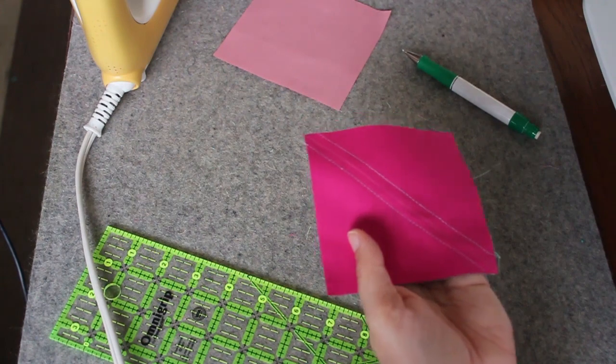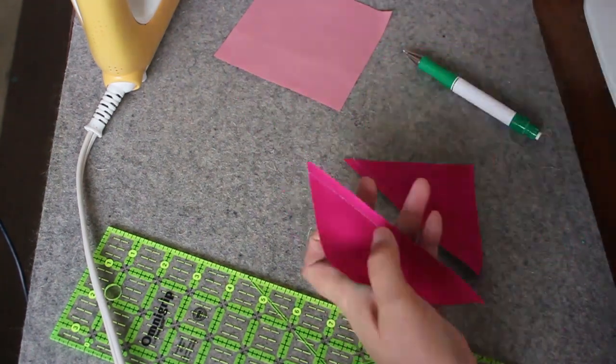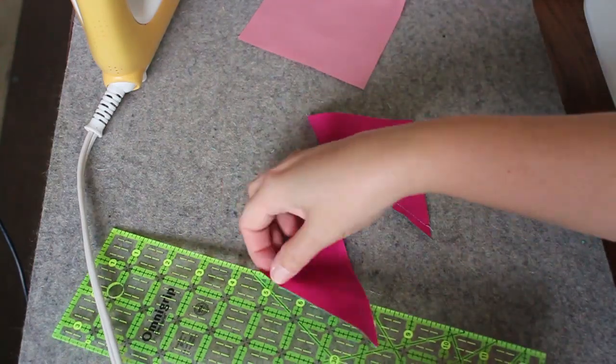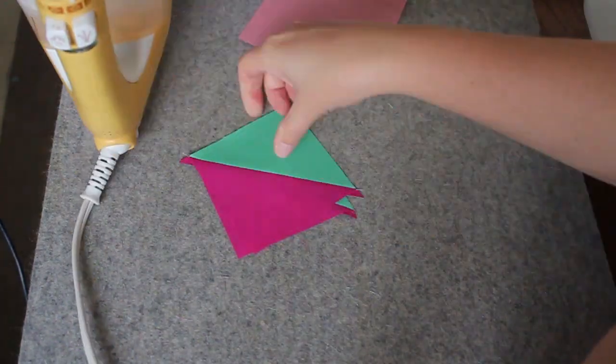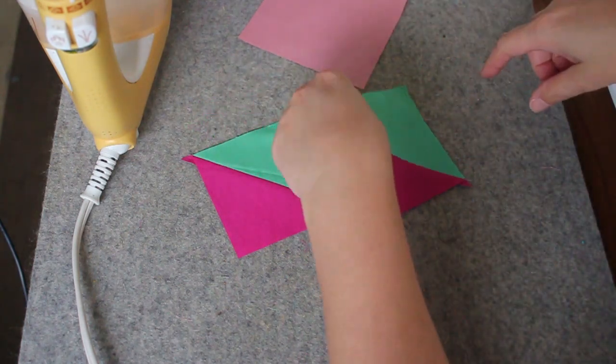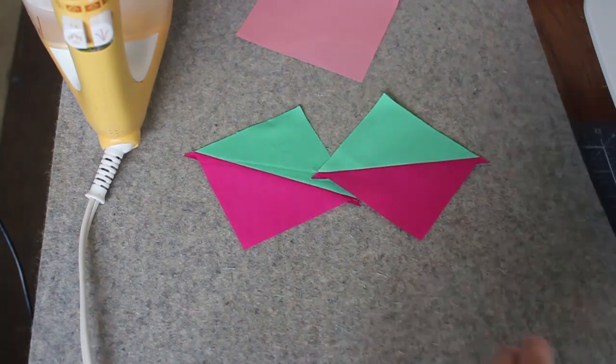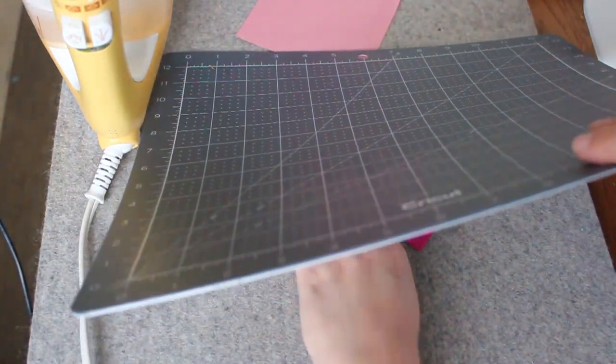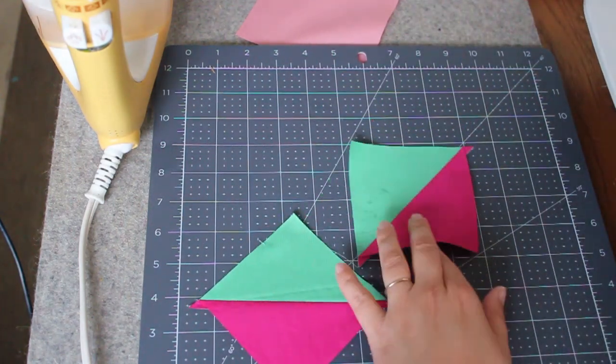So now this gets cut in half and pressed. And then these are each going to get cut in half on diagonal. So I've got a cutting mat under here. I'm just going to bring it up and I'll just cut right here.